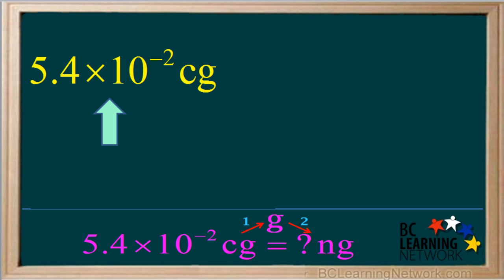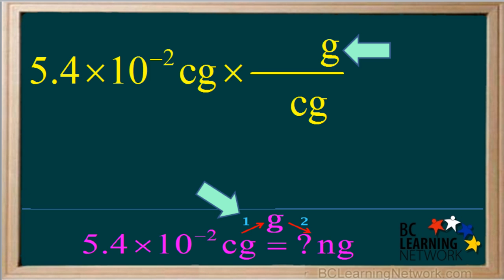We start by writing down 5.4 times 10 to the negative 2 centigrams. The first step is to convert centigrams into grams. We write it times and a line. We want to get rid of centigrams, so we write that on the bottom of our conversion factor. And we want to convert it to grams, so we write grams on top. We write a 1 by the unit with the prefix, which is the centigrams. Centi means 10 to the negative 2. So we write 10 to the negative 2 by the grams. One centigram is equal to 10 to the negative 2 grams.